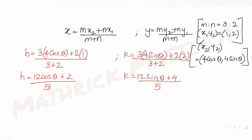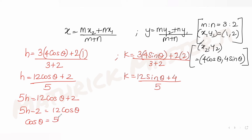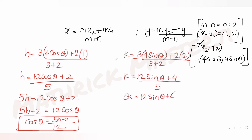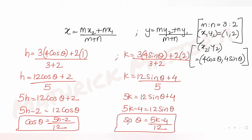From these expressions, I solve for cosθ and sinθ. From h: 5h = 12cosθ + 2, so 5h − 2 = 12cosθ, giving cosθ = (5h − 2)/12. From k: 5k = 12sinθ + 4, so 5k − 4 = 12sinθ, giving sinθ = (5k − 4)/12.